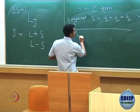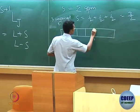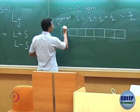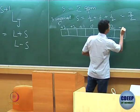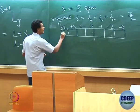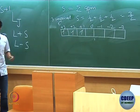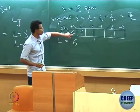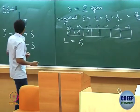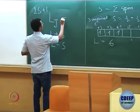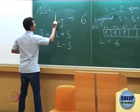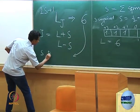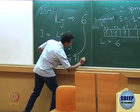For f orbitals there are 7 orbitals with ML values of +3, +2, +1, 0, −1, −2, −3. For 3 unpaired electrons, L equals the maximum sum: +3 + 2 + 1 = 6. So L equals 6. Since S = 3/2, 2S+1 = 4. L equals 6, which corresponds to the term symbol letter I (S=0, P=1, D=2, F=3, G=4, H=5, I=6). J = L − S = 6 − 3/2 = 9/2.